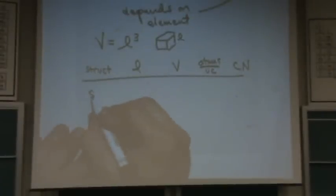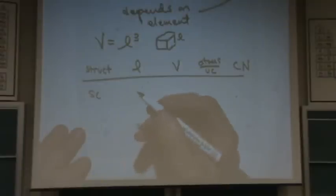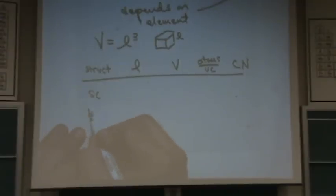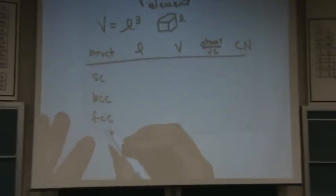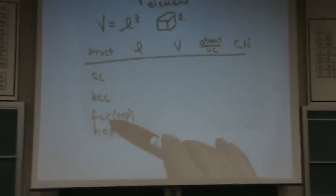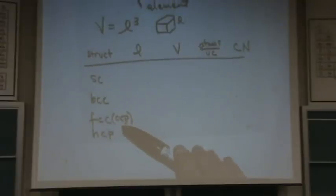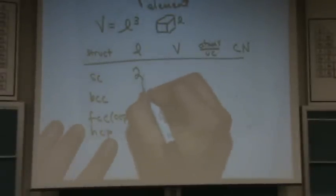I won't be able to derive all these for you, but I can write them out and hopefully you can look it up or something. So the structures are simple cubic, body centered cubic, face centered cubic, and hexagonal close packed. Okay, I'll repeat them again, simple cubic, body centered cubic, face centered cubic, which is the same as cubic close packed, and then hexagonal close packed. Okay, the length is 2r. So if you know r, you can find the length.